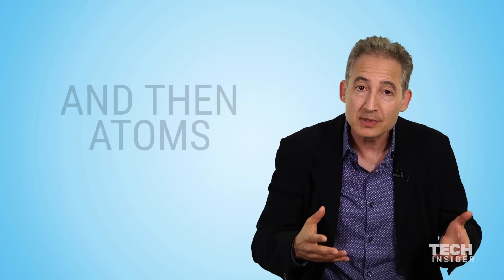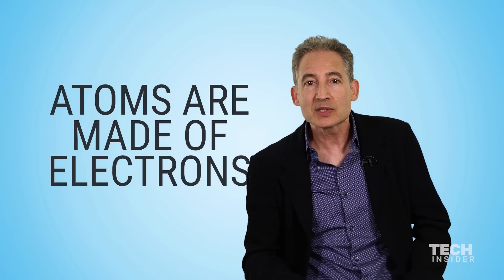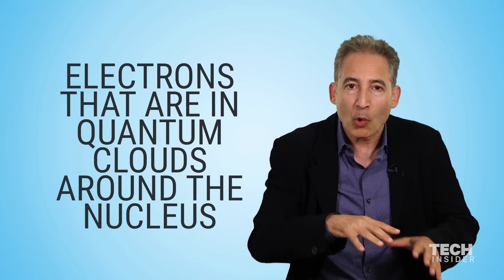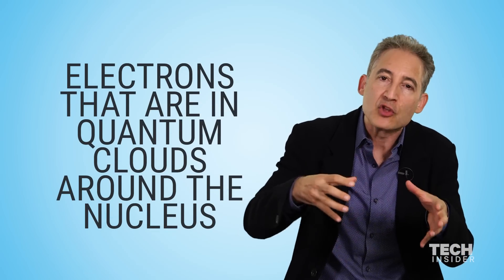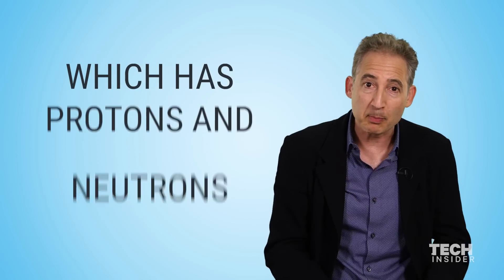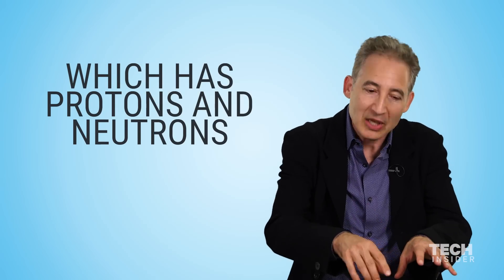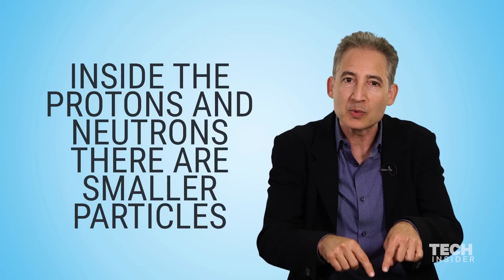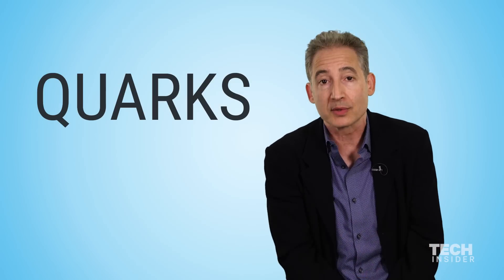And we also know that the atoms are made of finer constituents, electrons that are in these quantum orbits, these quantum clouds around the nucleus, which itself has particles, protons and neutrons. And inside the protons and neutrons, we found that there are even smaller particles, quarks.